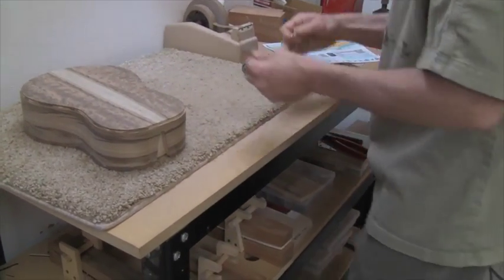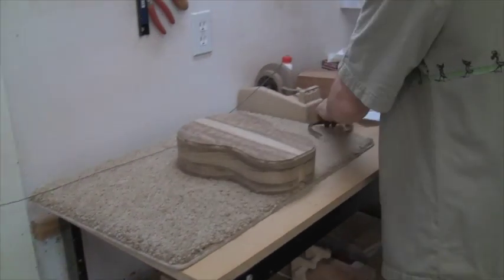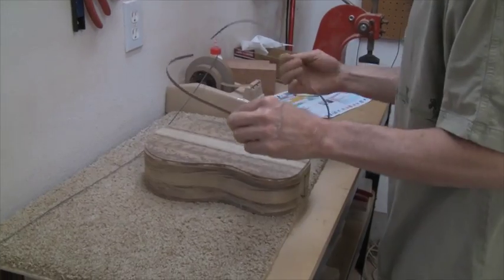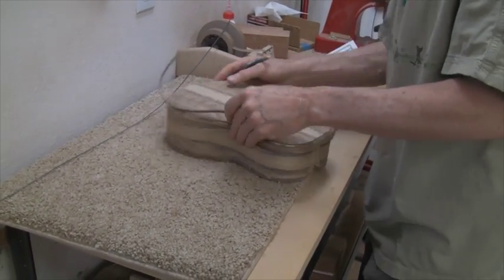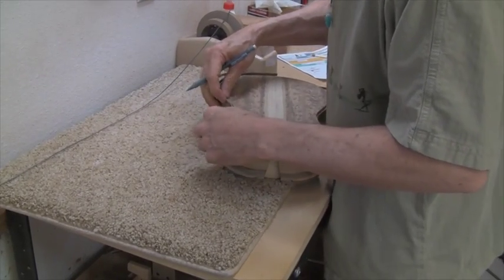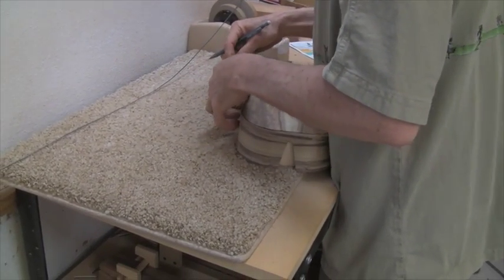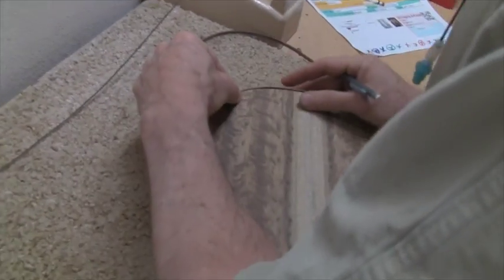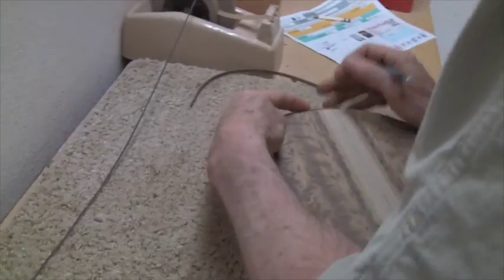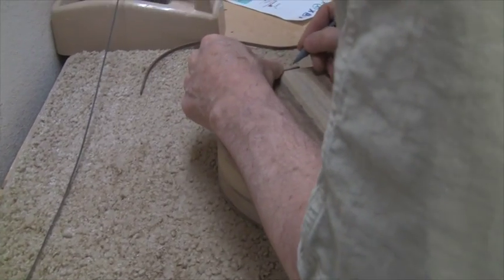I marked the center line of my purfling. I've got my two pieces of walnut binding. I've got my config sheet right here, making sure that I'm doing the right thing on the right instrument. The waist is my registration point. I've got my center line from so long ago.